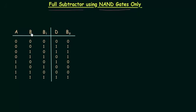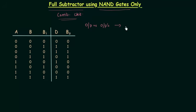This is the truth table in which a, b, and b-subscript-i are the three inputs, and d and b-subscript-o are the two outputs. A full subtractor is a combinational circuit, which means the output or outputs depend only on the present input or inputs. Full subtractor is also a combinational circuit, meaning these two outputs depend only on a, b, and b-i.